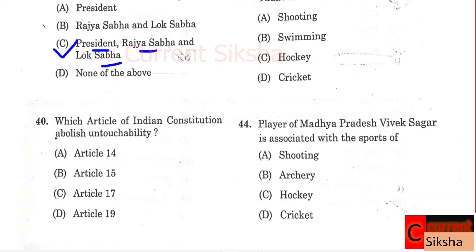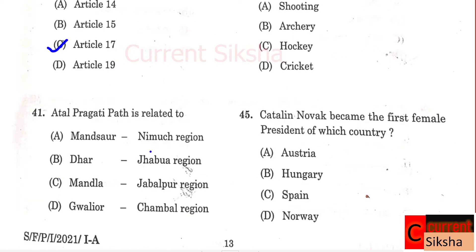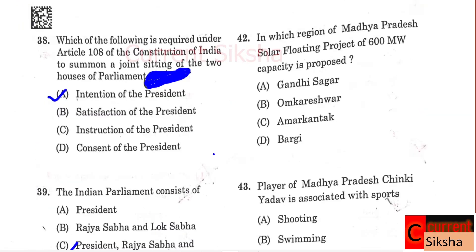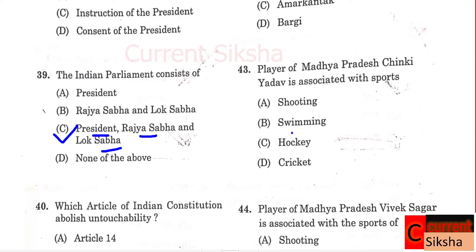Question 40: Which article of the Indian Constitution abolishes untouchability? Correct option - Article 17. Question 41: Atal Prakrit Path is related to? Correct option D - Gwalior Chambal Region. Question 42: In which region of Madhya Pradesh is a solar floating project of 600 MW capacity proposed? Correct option - Omkareshwar. Question 43: Player of Madhya Pradesh - Chinki Adhavid is associated with which sport? Correct option D - Cricket.